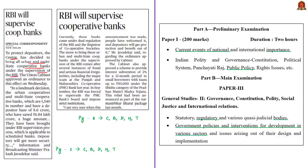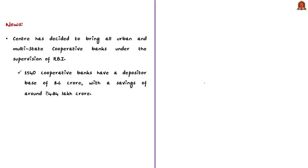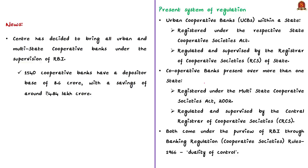Recently, we saw the failure of Punjab and Maharashtra Cooperative Bank, which brought the issues faced by cooperative banks to limelight. In order to protect depositors, the central government has decided to bring all urban and multi-state cooperative banks under the supervision of RBI. The syllabus relevant to this news article is given here for reference. Let us understand the present system of regulation of cooperative banks. Urban cooperative banks that are present within a state are registered under the respective state cooperative societies act.